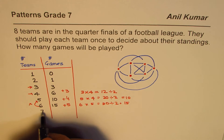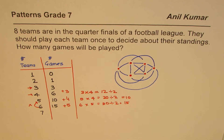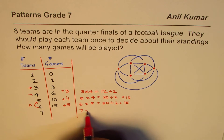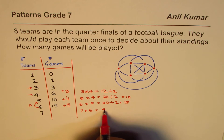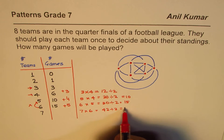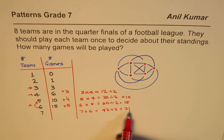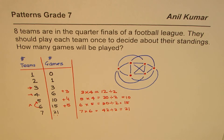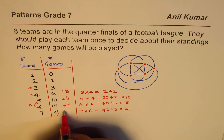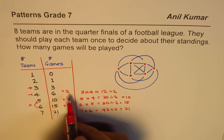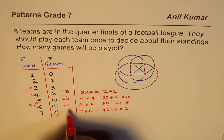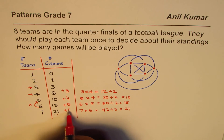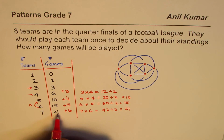For seven teams, it should be seven times six, which is forty-two, divided by two, which is twenty-one. So we should get twenty-one here. We can check the pattern: we were adding three, four, five — now it is adding six. If I add six to fifteen, do I get twenty-one? Yes, I do. So it works.